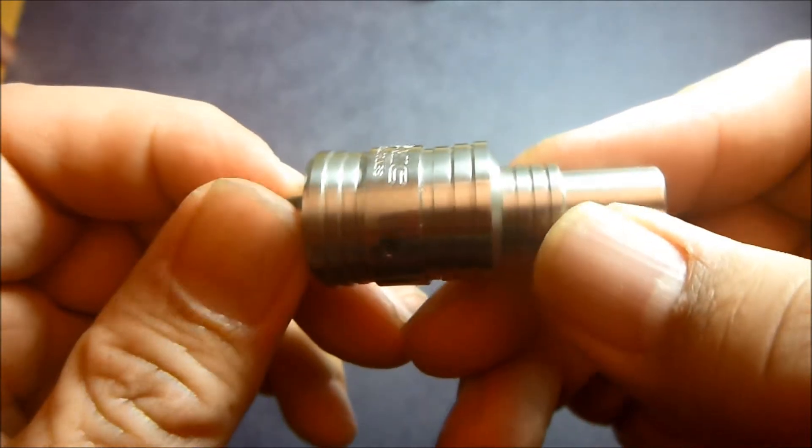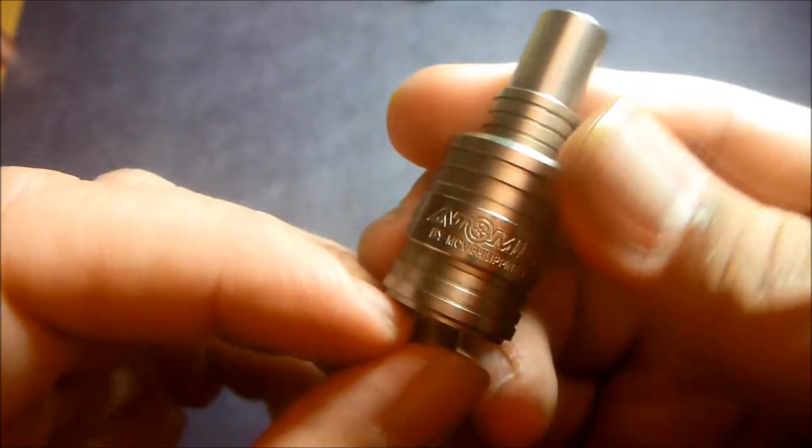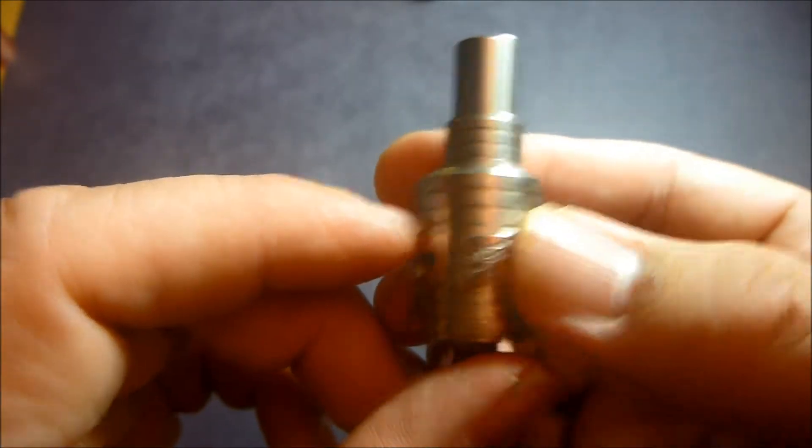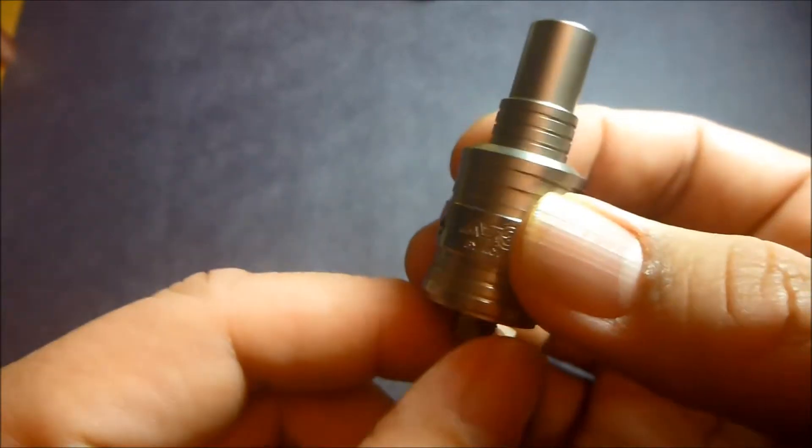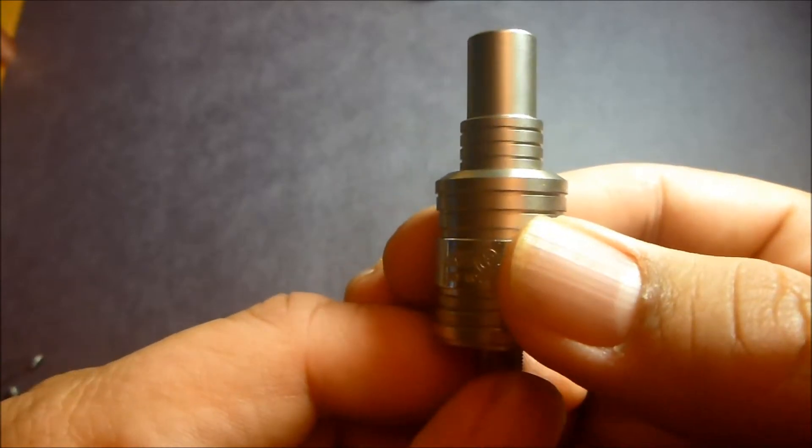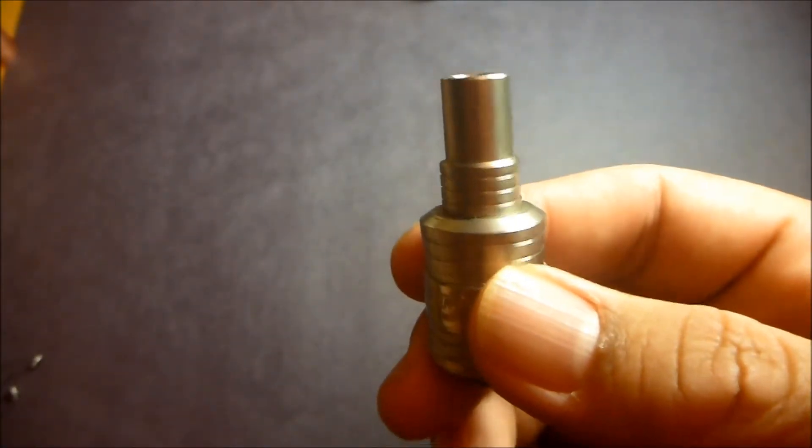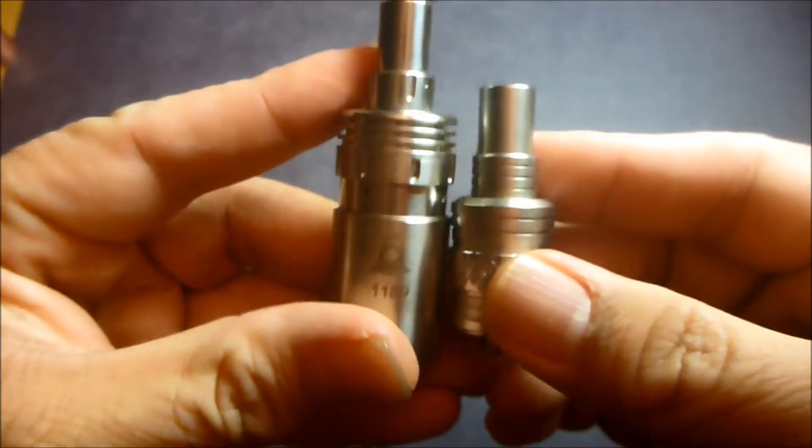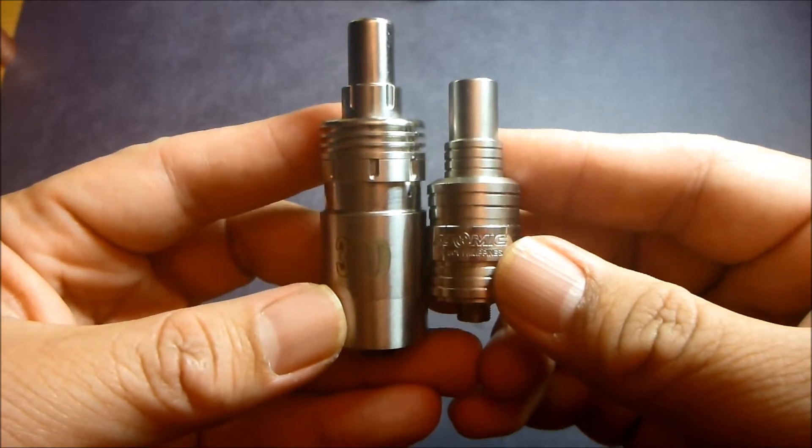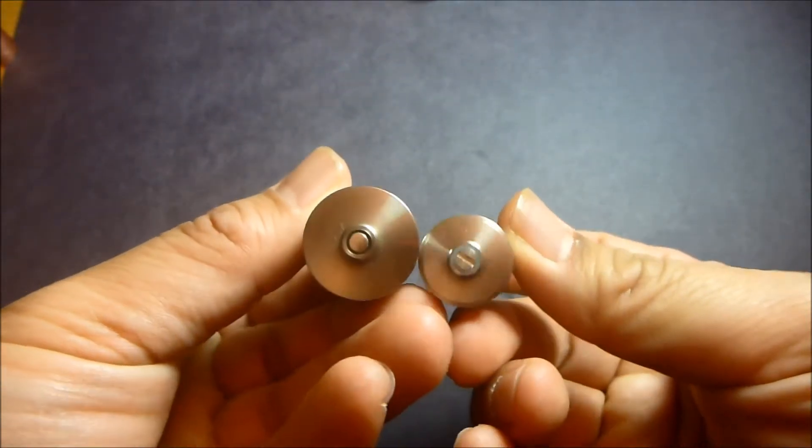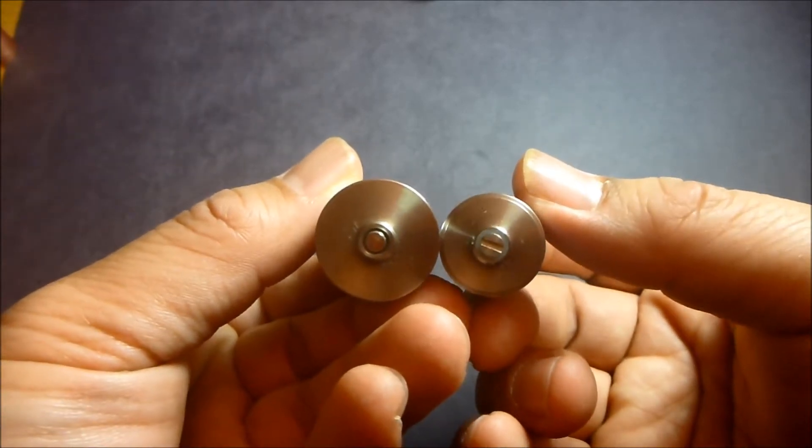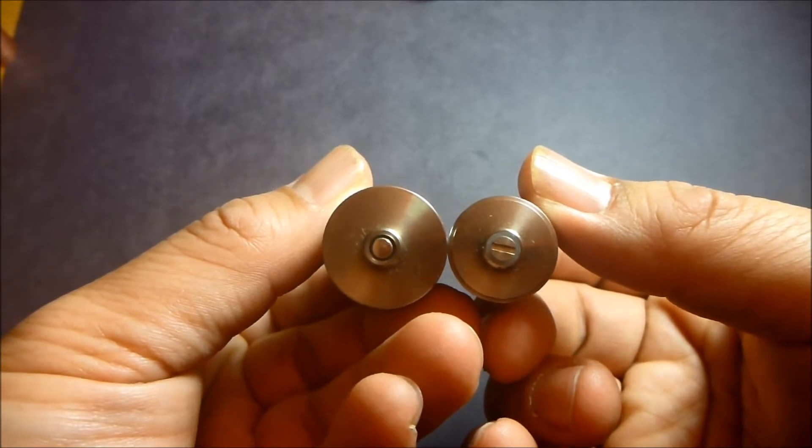First thing I notice is that it is a bit small compared to other atomizers but I guess not too different from other drippers except for maybe the 3D from Hcigar. Now just a size comparison for the two. Here's the Hcigar 3D dripper with the 510 connection on. As you can see, this is a full 22mm. Not really too sure what the Atomic is but it's significantly smaller.